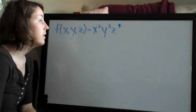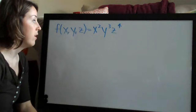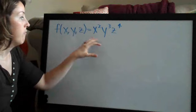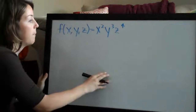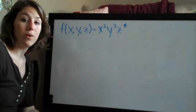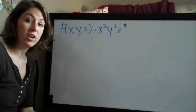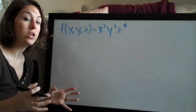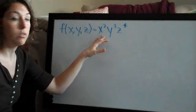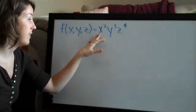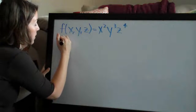Partial derivatives means we're going to be taking the derivative for every single variable in the problem. Since there are three variables, we're actually going to have to take the derivative three times — once for each variable — and it's going to be a separate equation for each one. So we'll go in order; the first one we'll look at is x, and the notation for a partial derivative looks like this.